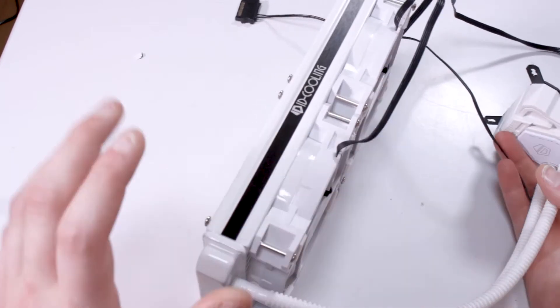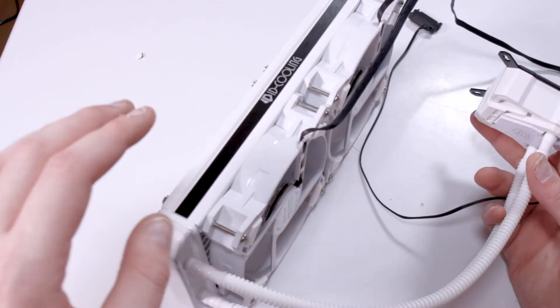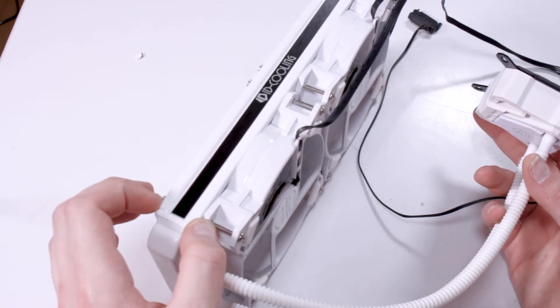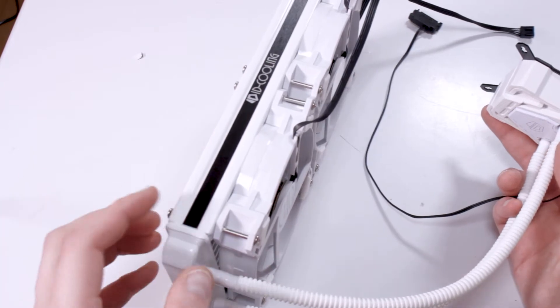So here's the cooler. This is an aluminum radiator, copper block here. And this is 27mm thick, which is basically a copy of all the other all-in-ones on the market.